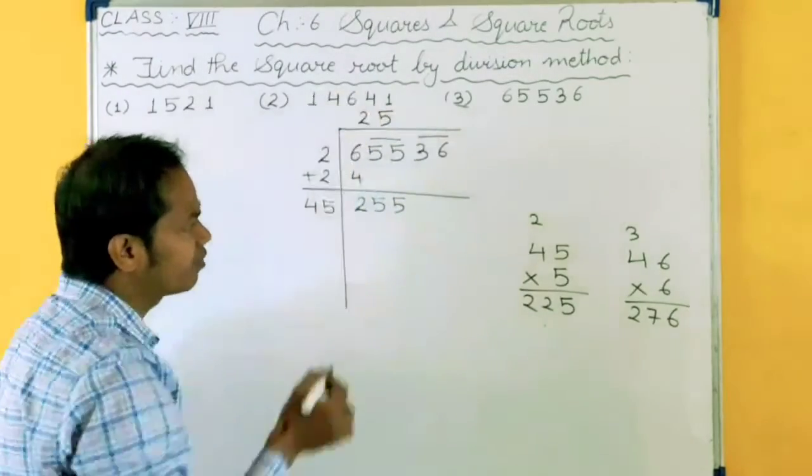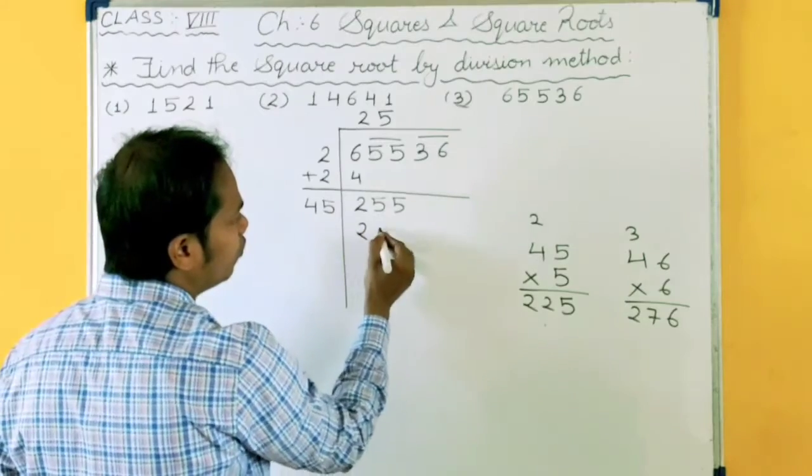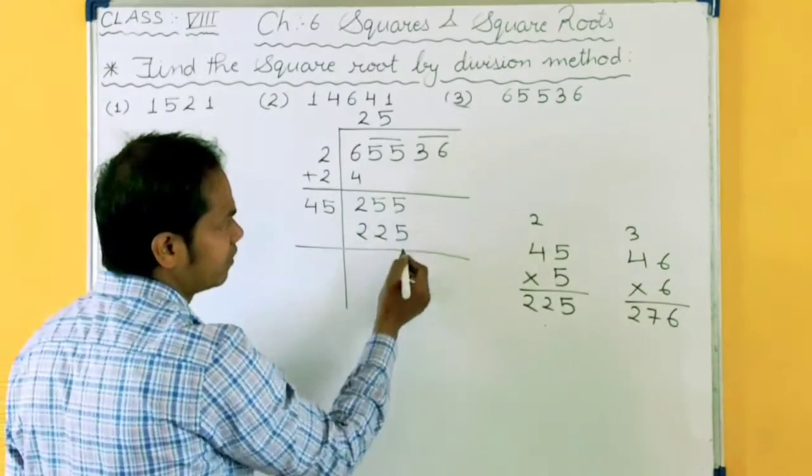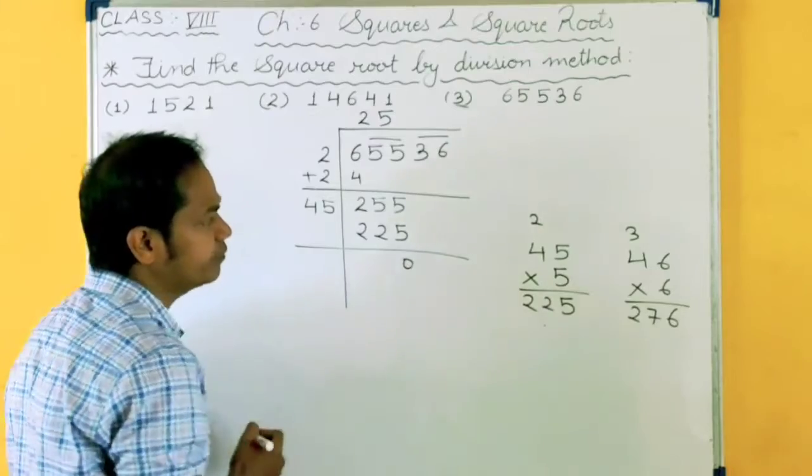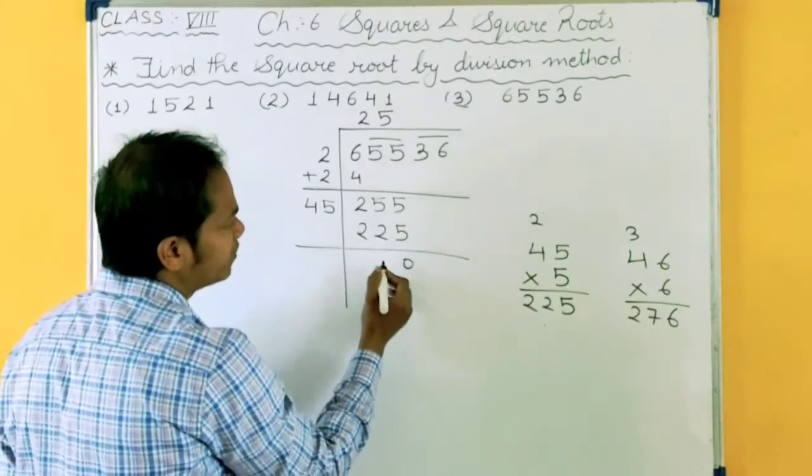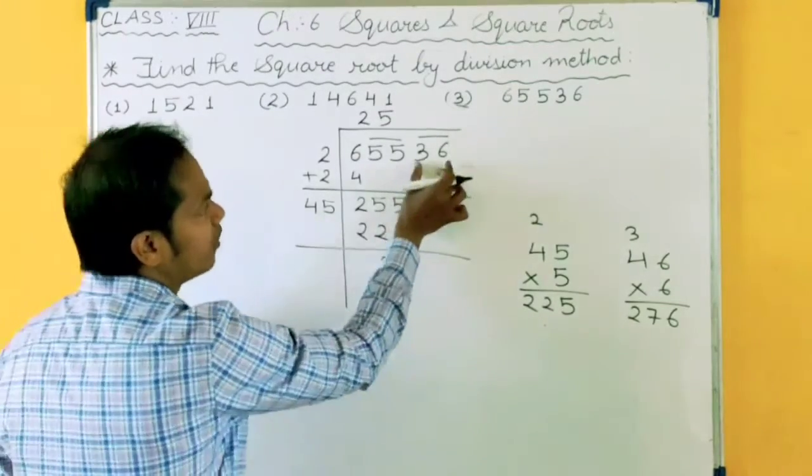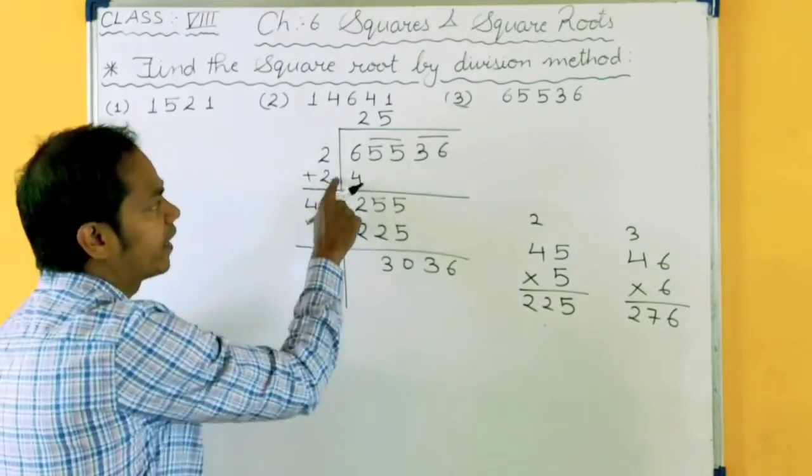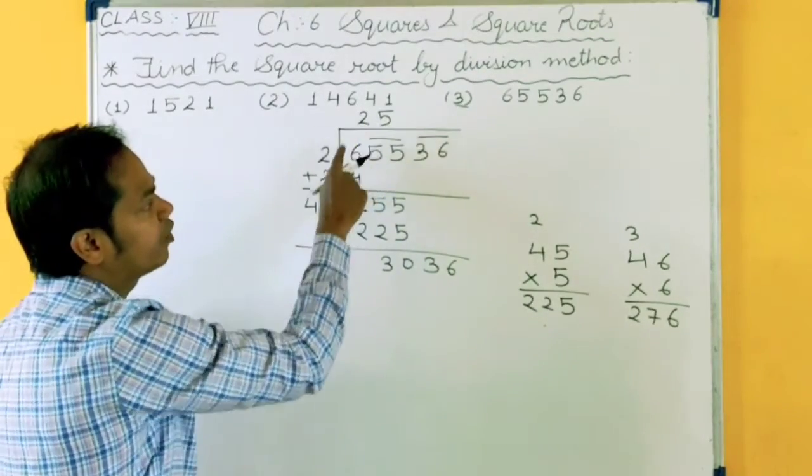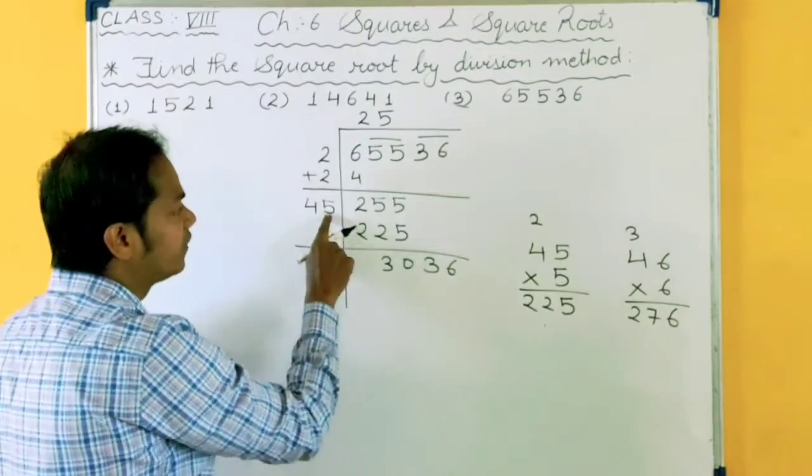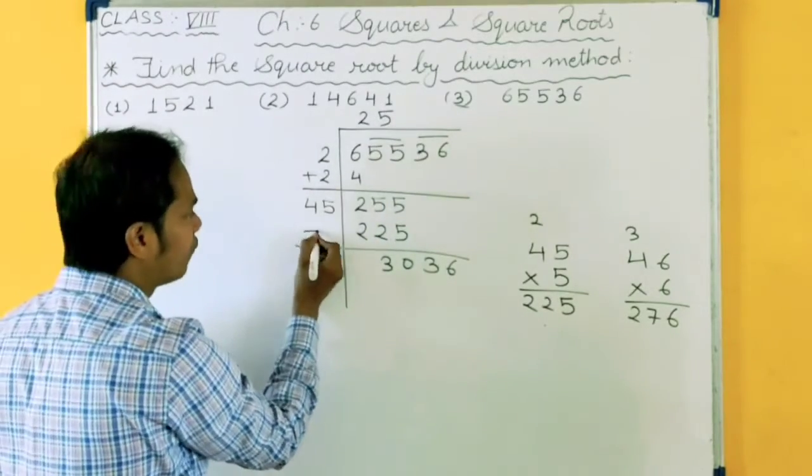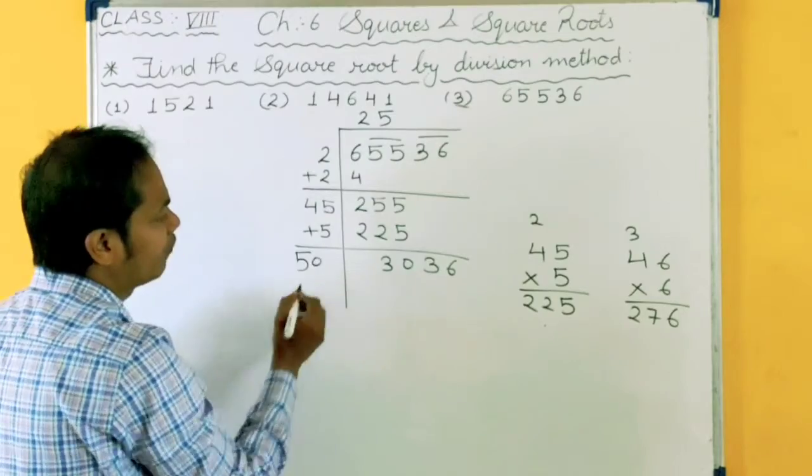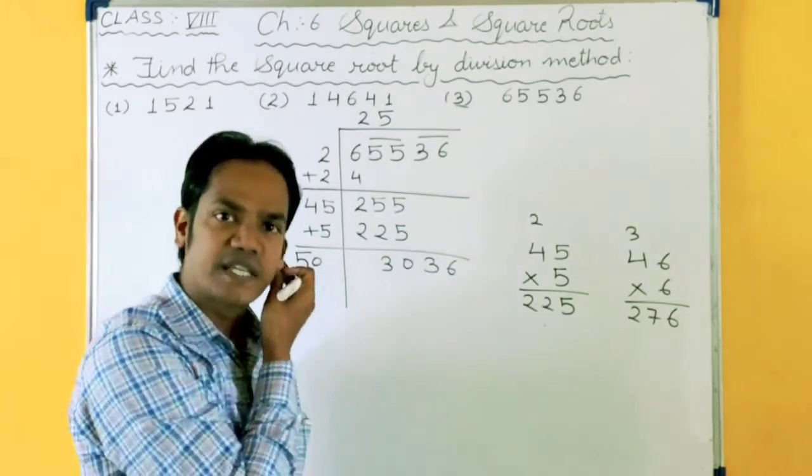So if I have taken 5 here, I will take 5 here also. 225. Now reduce this, minus it. 5 minus 5, 0. 5 minus 2, 3. And 2 minus 2, 0. Now I will take this pair, 336, as it is. And again repeat the same step. First we have taken 2, then we have added 2, then we have taken 5. Then we will add 5 also. 45 plus 5, 50.